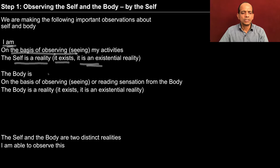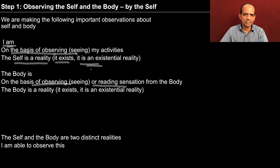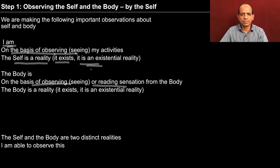How do you know that the body is there? You are able to know this on the basis of observing or reading the sensation from the body. For example, when I look at my body, I observe my hands are there. The sight of the hand is reaching my eyes; from the eyes it comes to me as a sensation and I am able to make out that the hands are there, and these hands are a part of the body. I look at the other parts of the body and make out that the body is there. When I stand in front of the mirror, I have the sight of the front part of my body and I am able to make out that the body is there.